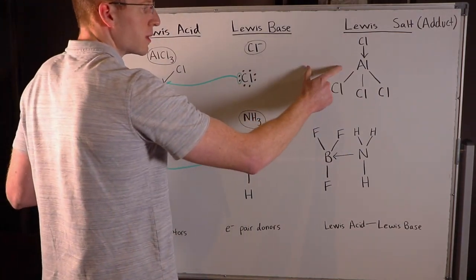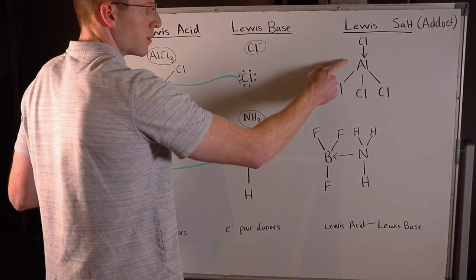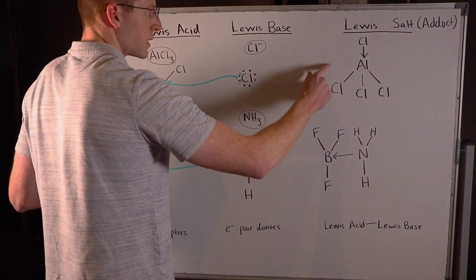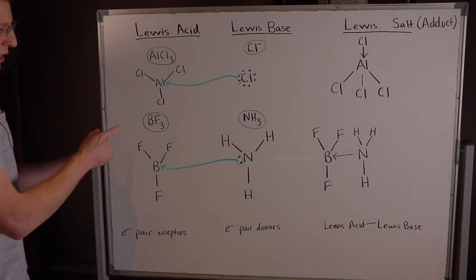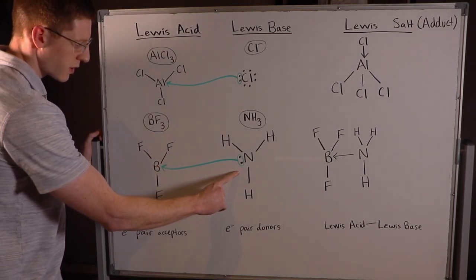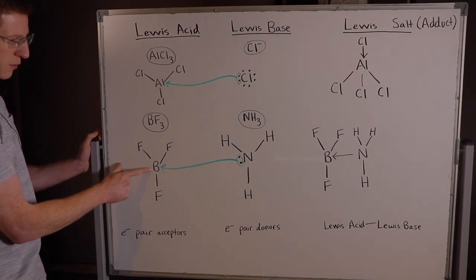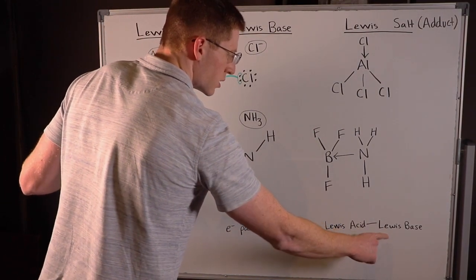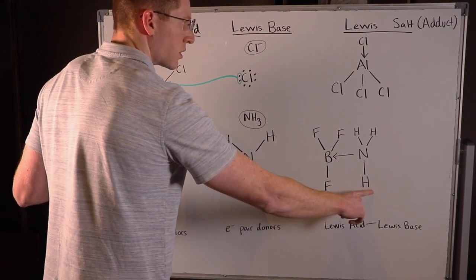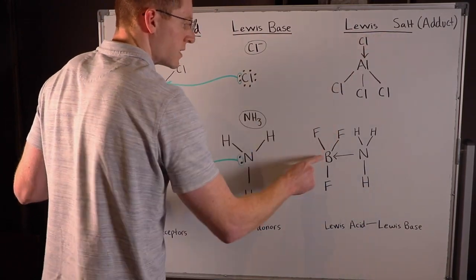Now this is aluminum tetrachloride. It's got aluminum with four chlorides around it because this chloride donated its electrons to the aluminum trichloride. Similarly down here, this ammonia donated its electron pair to the boron trifluoride. And now we have a resultant Lewis acid-Lewis base pair over here, also known as a Lewis salt or a Lewis adduct.